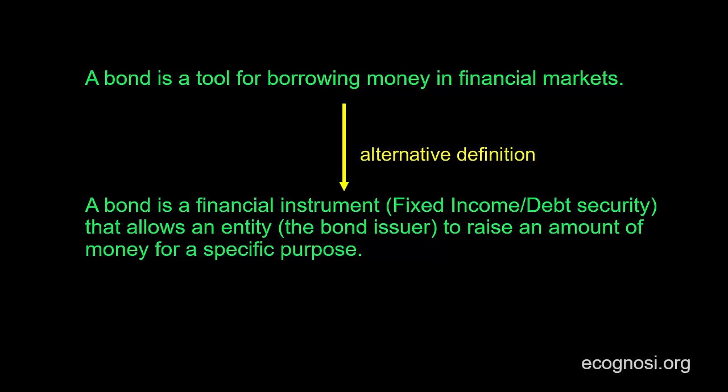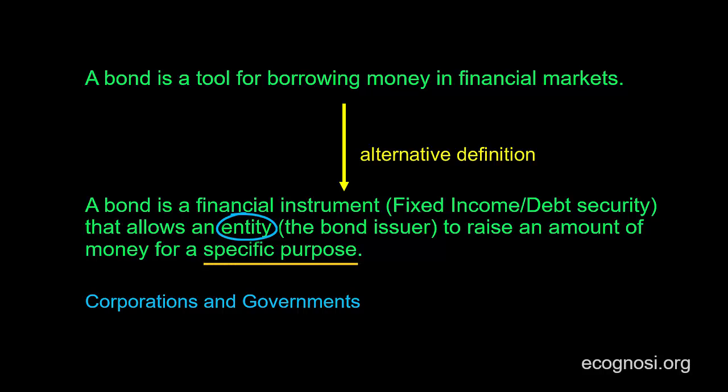A bond is a financial instrument that allows an entity — the issuer of the bond — to raise an amount of money for a specific purpose. We already mentioned corporations and sovereign governments as examples of entities issuing bonds. What could the specific purpose be? It could be expanding in new markets. For example, imagine a corporation based in Nigeria that determined it would be significantly profitable to expand in China but currently lacks the funding, so it borrows the required funds by issuing bonds.